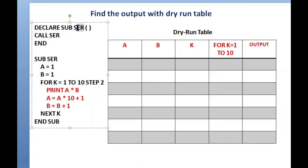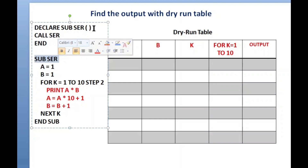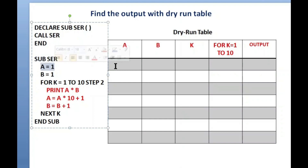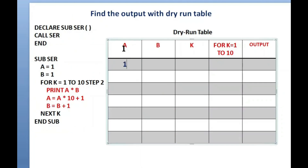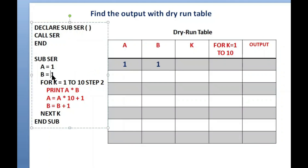Now the declaration of the sub procedure: inside the bracket nothing is there, so no parameters are used. If there are no parameters, you can keep it without brackets when calling the sub procedure and when writing the definition. Execution starts here — value of A is 1, so I write 1 in the column of A. Value of B is 1, so I write 1 in the column of B.